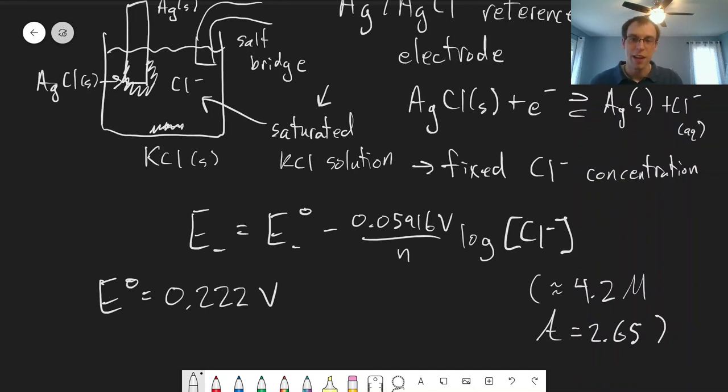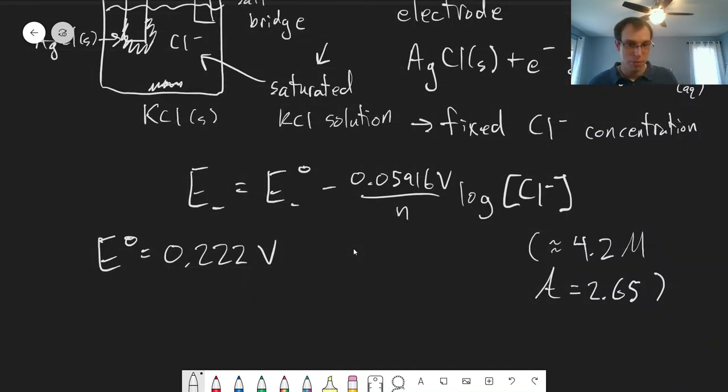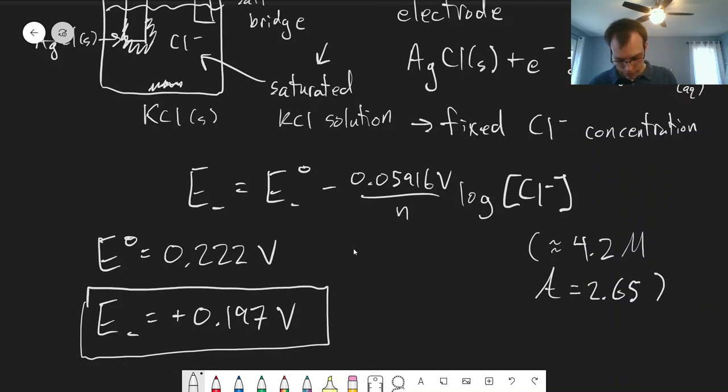So not the standard potential, but the actual potential you'd measure compared to a hydrogen electrode, E for this is +0.197 V. You get something a little bit different because that activity is higher than one. This is the known potential for a silver/silver chloride reference electrode. Then we can connect another electrode to the other side of our potentiometer, set up with the salt bridge and everything, to actually do a measurement. This provides us a stable reference electrode that we can compare things to. In the next video, we'll look at using this to do an actual measurement where we have something on the right-hand side of this galvanic cell.